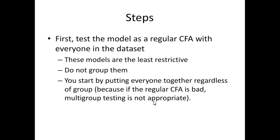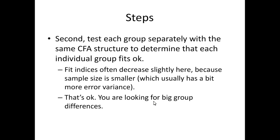We start by not grouping them — just throw everything into one big CFA — because if the regular CFA is bad, multi-group testing may not be where you need to start. You need to start with a model that fits. Even if this step is particularly poor, the next step is still recommended, because it might be that your regular CFA is bad because one group is good and one group is bad, which averages out to mediocre. Often fit indices decrease here because the sample size, previously large, has now been split in half.